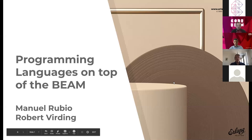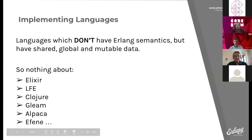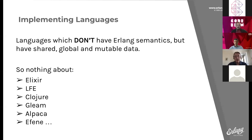We're going to talk about running programming languages on top of the BEAM — specifically languages that don't have Erlang semantics. Most of them have shared mutable global data, which neither Erlang nor the BEAM can handle. So we're not going to be talking about Elixir, LFE, Clojure, Gleam, Alpaca, or other languages that have come along on top of the BEAM and Erlang system. We'll be talking about other languages instead.